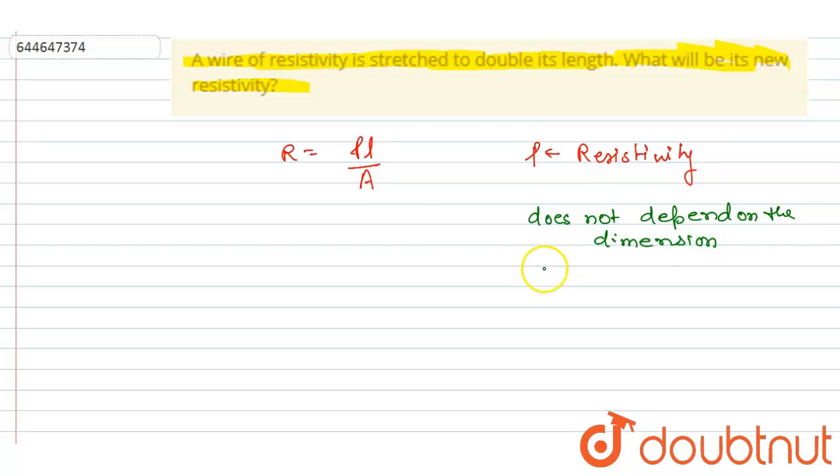So basically, the resistivity is the measure of the resistance of a given size of specific material to the electric conduction. It is a material property, so it is a measure of